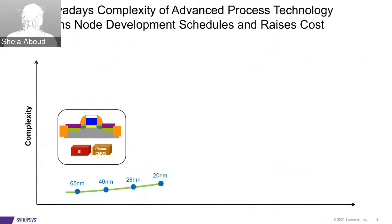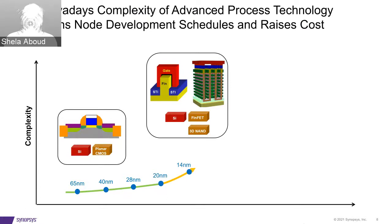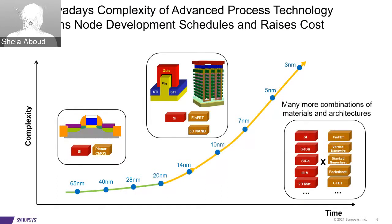Nowadays, the complexity of these devices is increasing at each technology node. From 65nm down to about 20nm, we see planar CMOS technology. As we scale up, we enter a domain where devices are becoming more and more 3D, which increases complexity and raises processing costs. And as we scale even farther, we face more levels of complexity with new combinations of materials and device architectures needed to continue scaling.